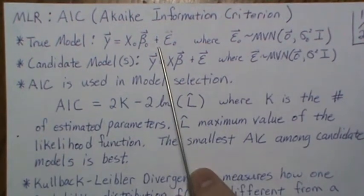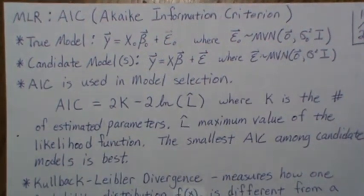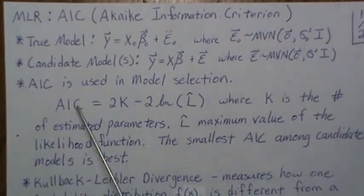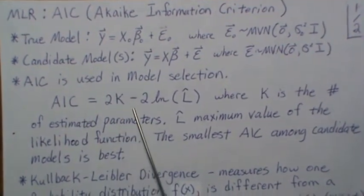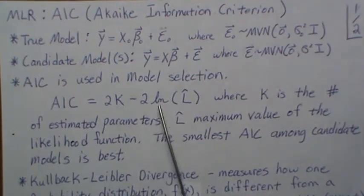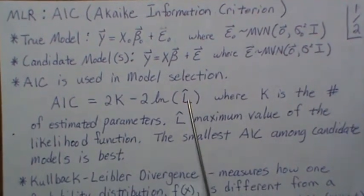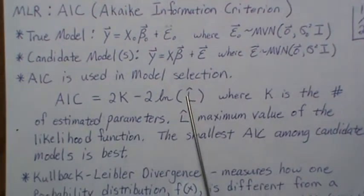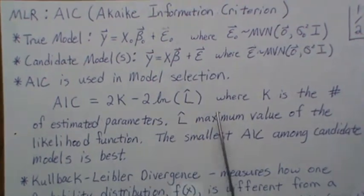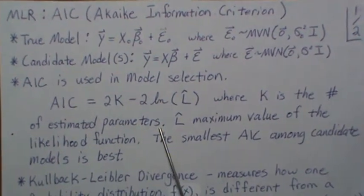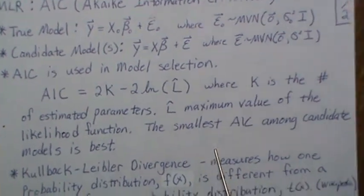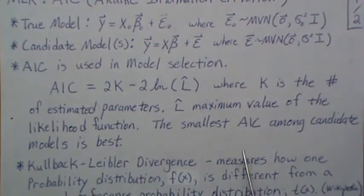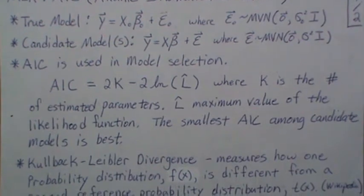Which candidate model do we think best represents the true model? The AIC attempts to get at that. The formula for the AIC is 2K minus 2 times the log of the likelihood at the maximum value, where K is the number of estimated parameters, L-hat is the maximum value of the likelihood function, and the smallest AIC among the candidate models is best.